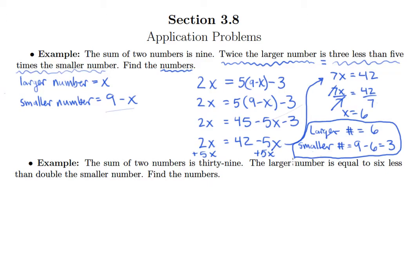Let's do one more here. It says the sum of two numbers is 39. The larger number is equal to 6 less than double the smaller number. Find the numbers. So we kind of have a similar setup here. And just to show that it doesn't matter which is x, the larger or the smaller number, this time I'll make the smaller number x.